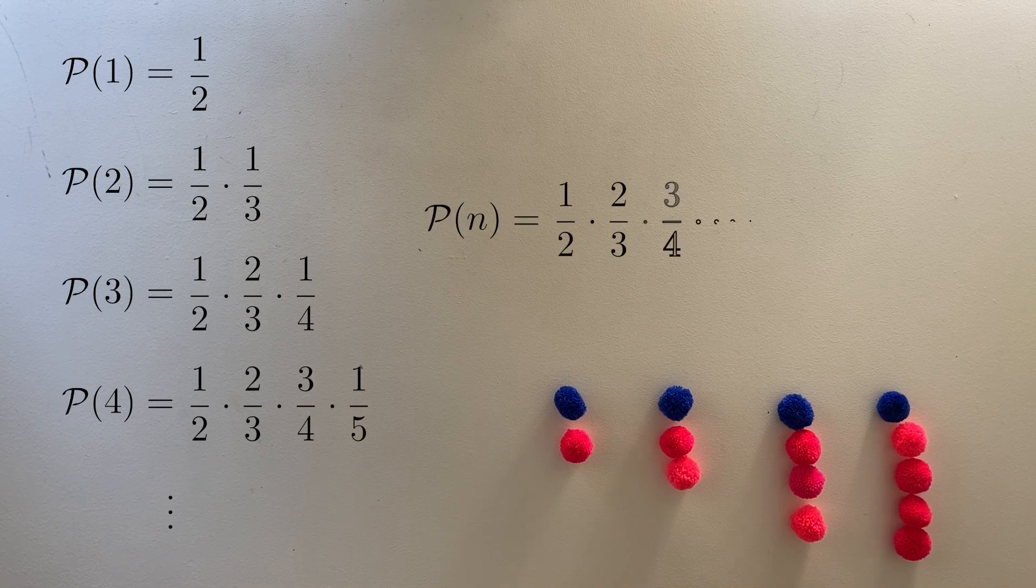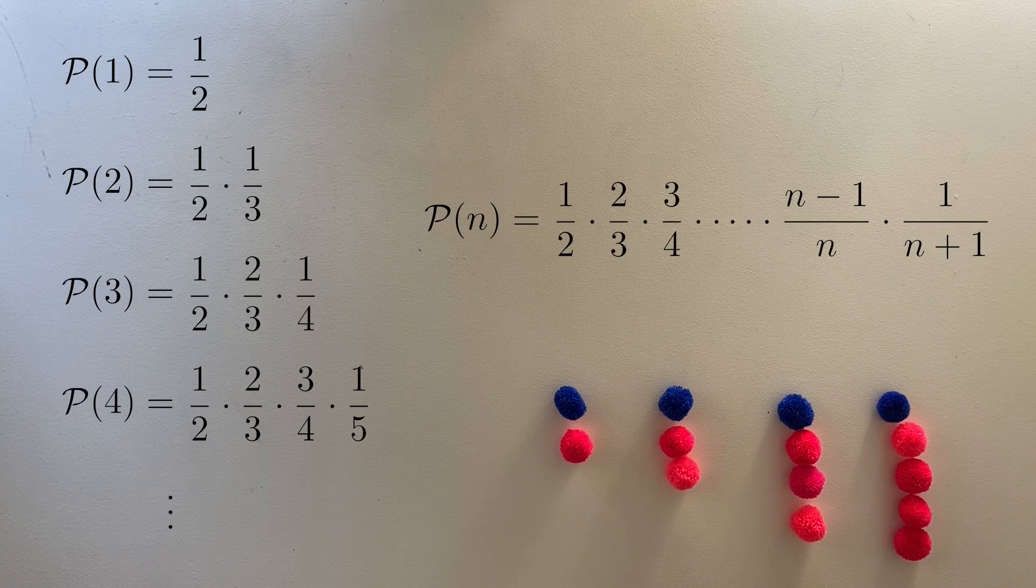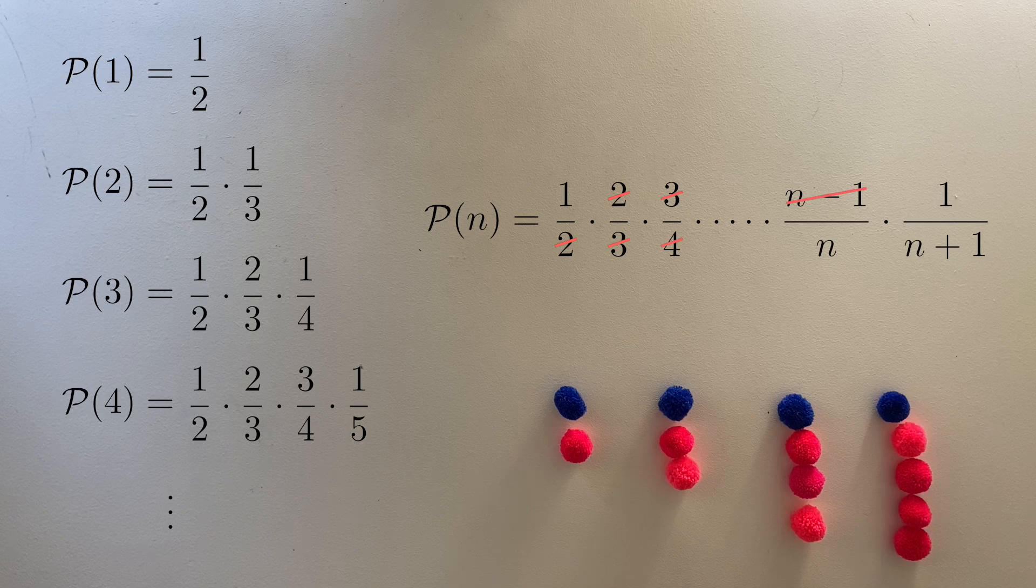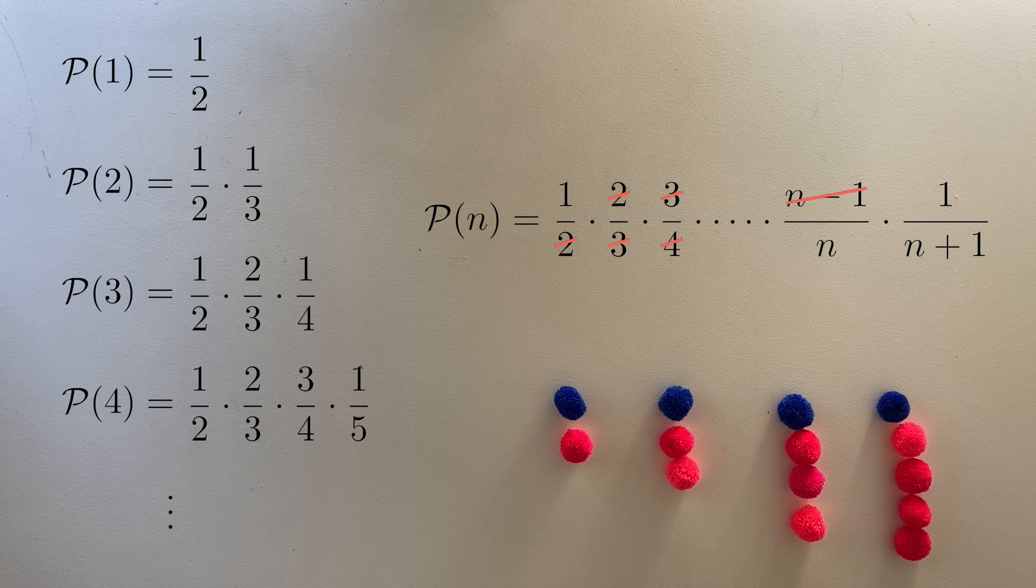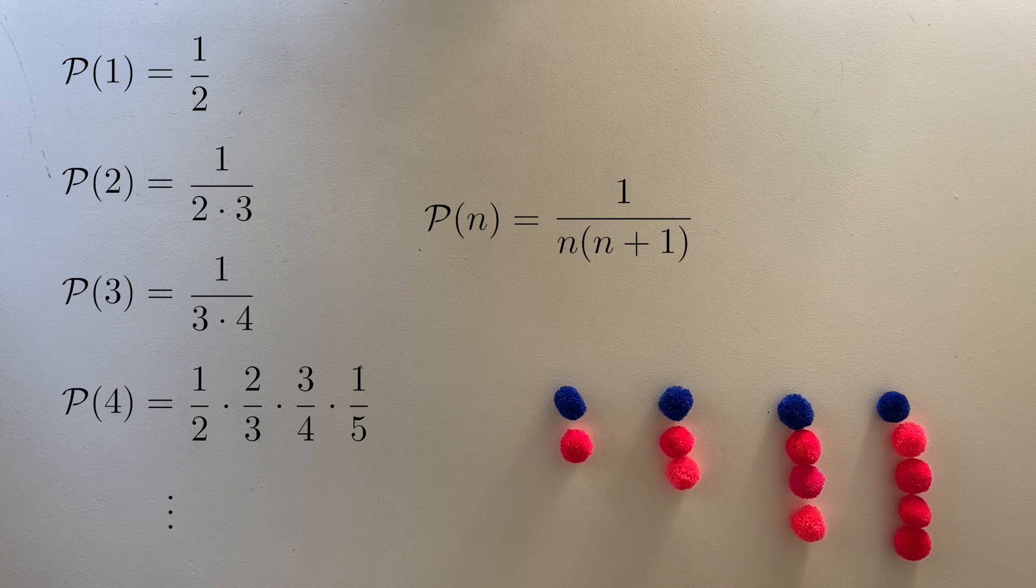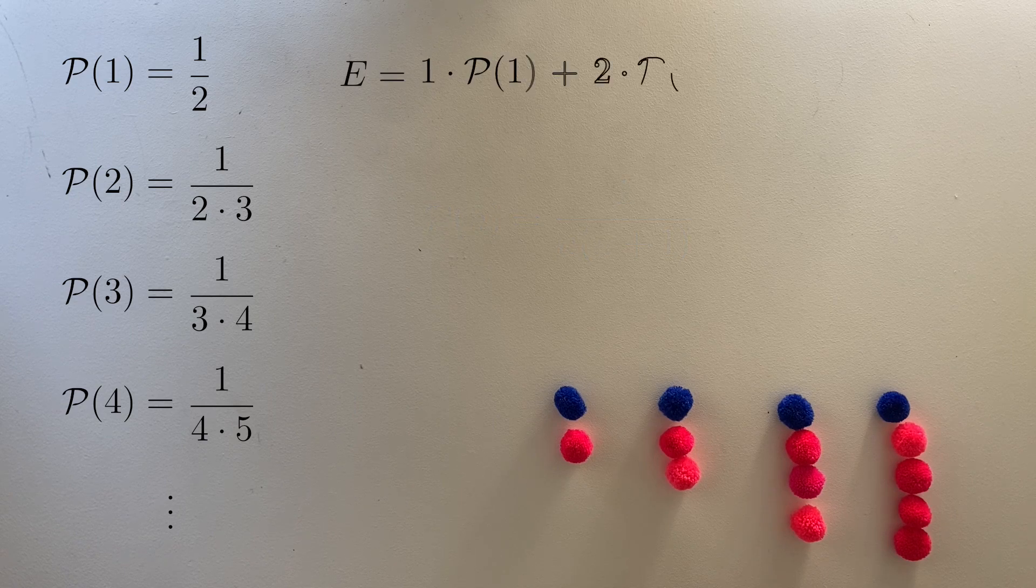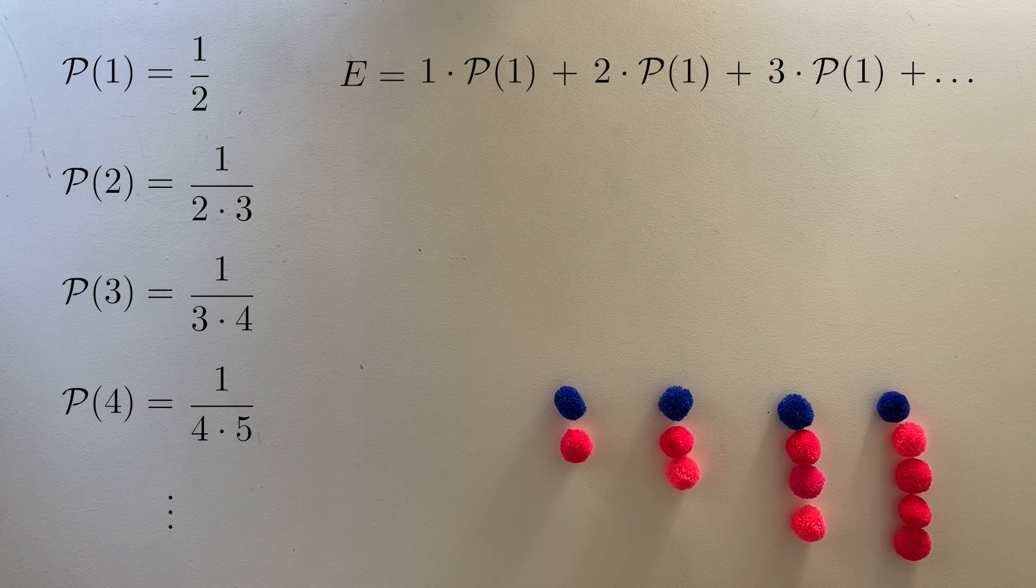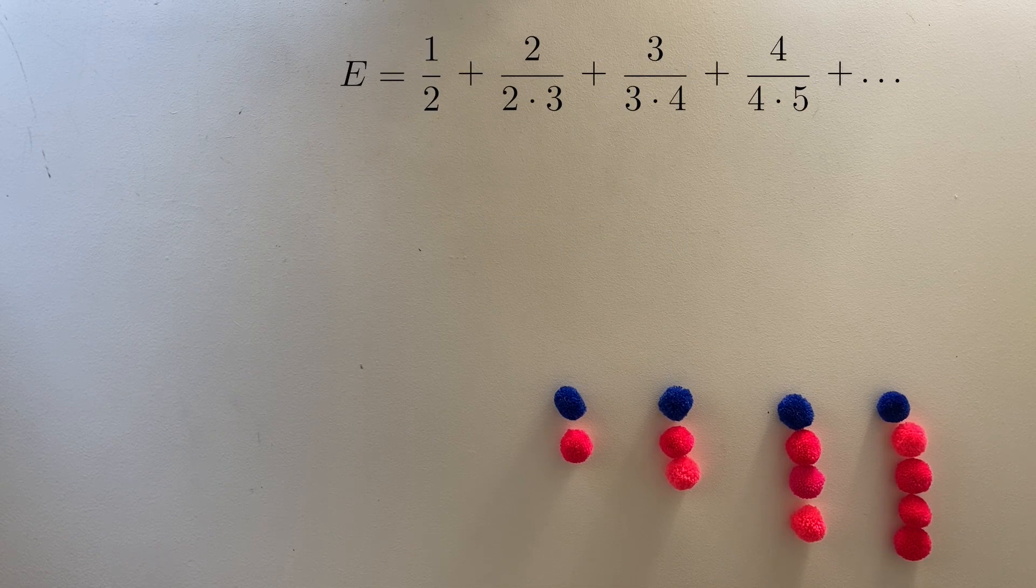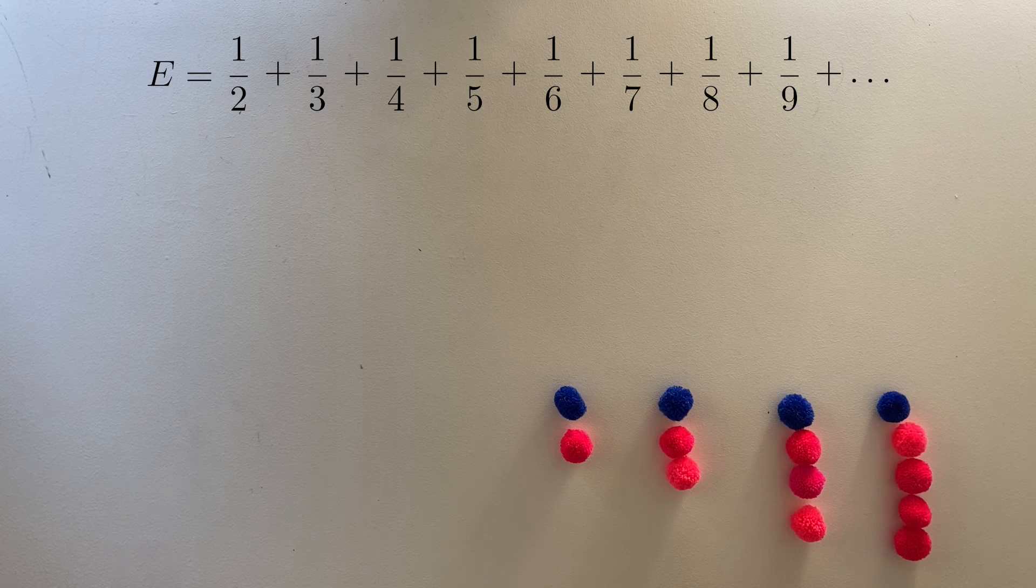Okay, so our general formula looks something like this. Now, notice something cool about these products. Two cancels with two, three cancels with three, and so on. That leaves the probability of drawing the blue ball on round n being just one over n times n plus one. Great, now we can calculate our expected value. Take each outcome and multiply it by its probability. We get some cancellation, and now we sum everything together. And this is the infinite sum we now have to compute.